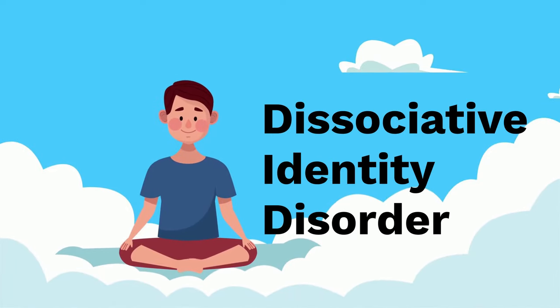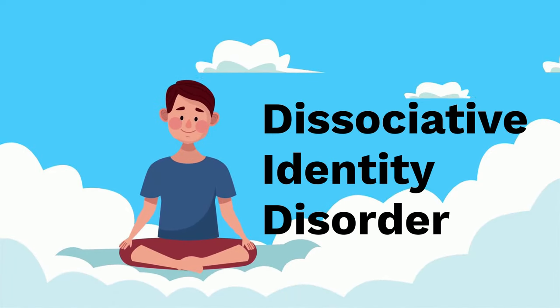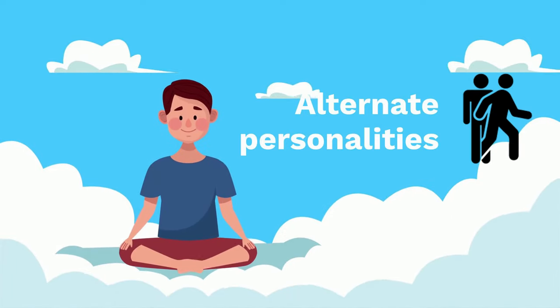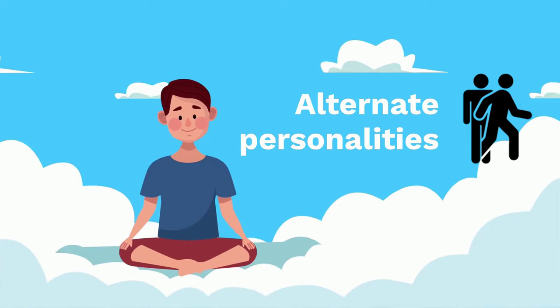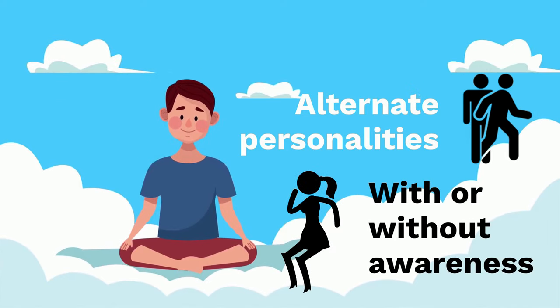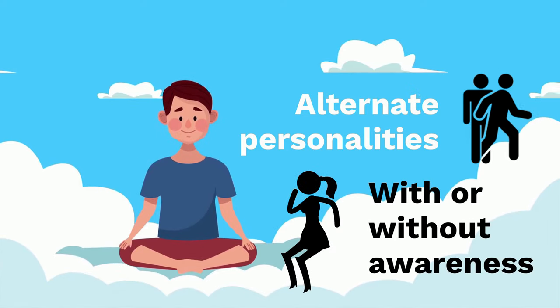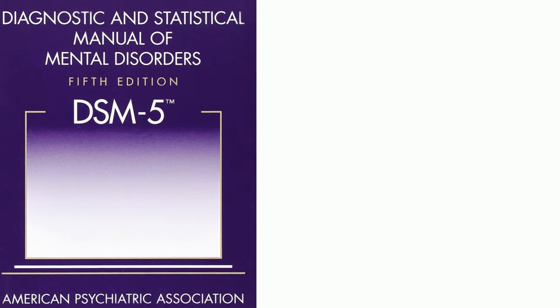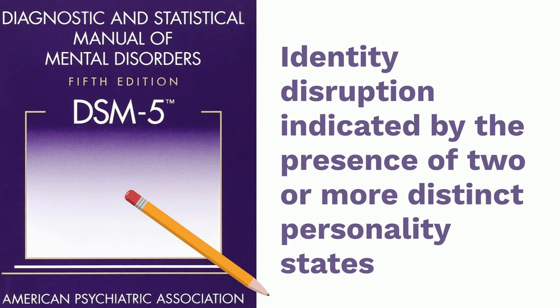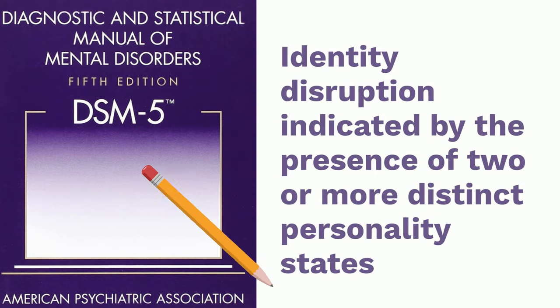Dissociative Identity Disorder is when an individual develops alternate personalities that function with or without the awareness of the person's usual self. The Diagnostic and Statistical Manual of Mental Disorders, also known as DSM-5, identifies it as an identity disruption indicated by the presence of two or more distinct personality states.